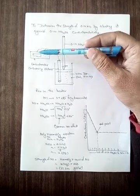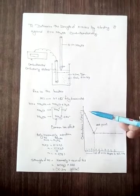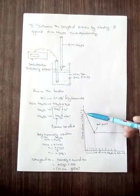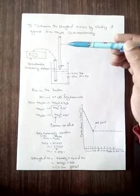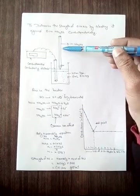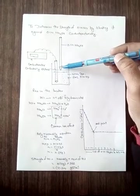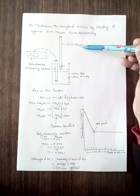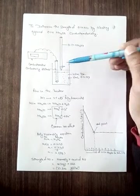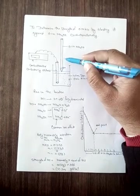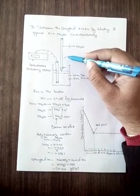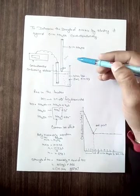When the reading is high, the graph starts from a high point. After this, we add 0.1 normal ammonium hydroxide from the burette. We add just 0.5 ml at each time.